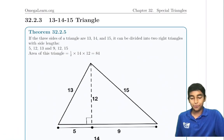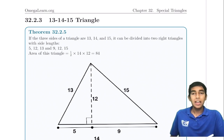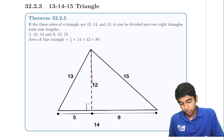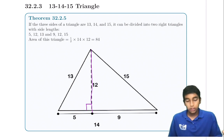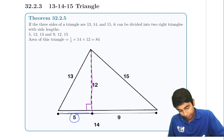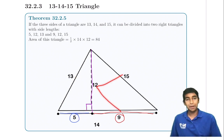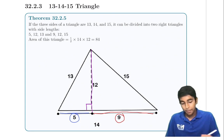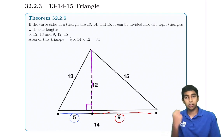Another special triangle is the 13-14-15 triangle. If the three sides of a triangle are 13, 14, and 15, it can be divided into two right triangles with integer side lengths by dropping an altitude to the side of length 14. Using Pythagorean triples, the altitude splits the base into segments of 5 and 9, giving a 5-12-13 triple and a 9-12-15 triple (which is 3× the 3-4-5 triple). The area is (1/2) × 14 × 12 = 84.